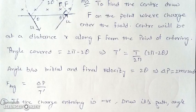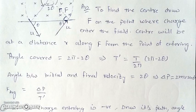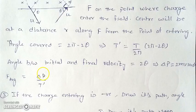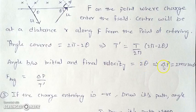In the next part, we have to find the change in momentum of the charge and the average force. The velocity has turned by an angle 2θ, so the change in momentum is 2mv sinθ, using vector addition. The average force is the change in momentum divided by the time spent.